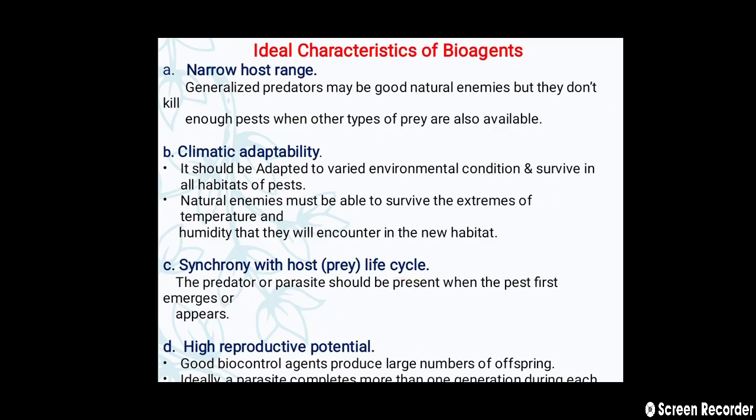The next topic is the different ideal characteristics of bioagents or natural enemies. The first characteristic is narrow host range. Generalized predators make good natural enemies but they don't kill the target pest when other types of prey are also available. So the bioagents have a narrow host range.